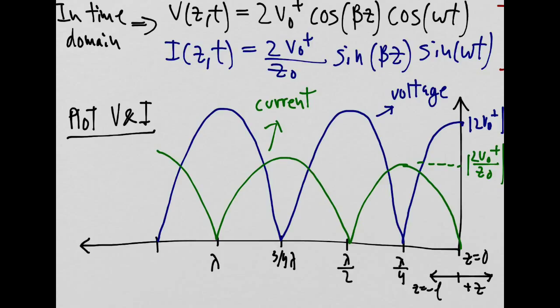So at the load, the impedance Z is equal to infinity. Now if you move a quarter wavelength away, the opposite becomes true: the voltage is now zero, and so the impedance is zero.